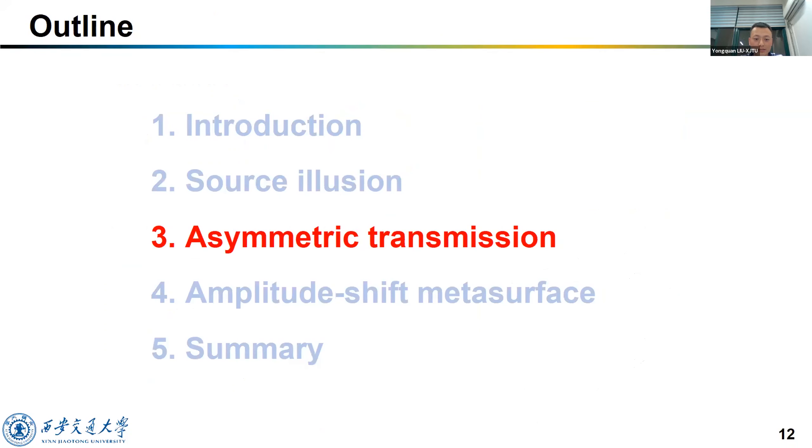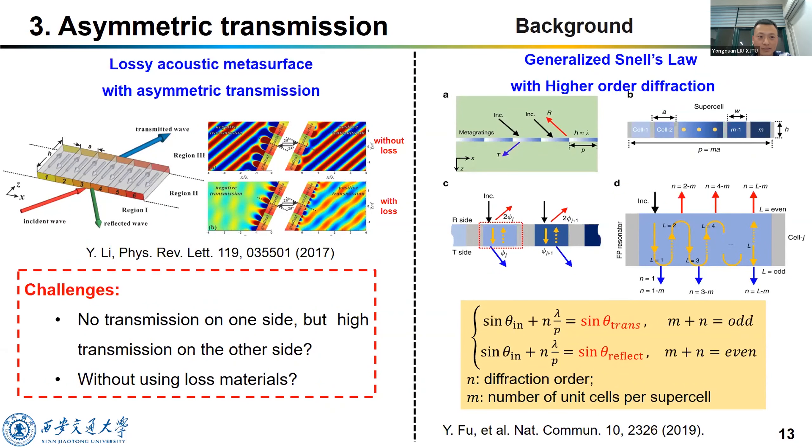Okay, now let's go to the third part. We can use metasurface to achieve asymmetric transmission of elastic waves. As for the asymmetric reflection of waves, Li Yong from Duke University has proposed a lossy metasurface to achieve it in acoustic waves. For acoustic waves, they use lossy materials to design metasurface. In the positive direction, the waves can propagate, but in the negative direction not.